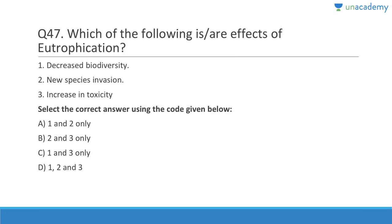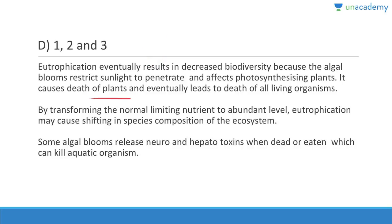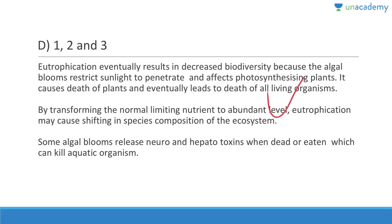Question forty-seven: Effects of eutrophication include decreased biodiversity, new species invasion, and increase in toxicity — all of these are effects. Eutrophication eventually results in decreased biodiversity because algal bloom restricts sunlight penetration, causing death of plants and all living organisms. It can shift the species composition of the ecosystem, and some algae release neuro- and hepatotoxins when dead or eaten, killing aquatic organisms.